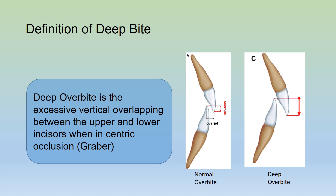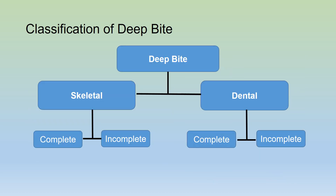Now, what is meant by a deep bite? When the vertical overlap between the upper and lower incisors is excessive, that condition is referred to as a deep overbite. Deep bite can be divided into two groups based on etiology: they can either be a skeletal deep bite or a dental deep bite.